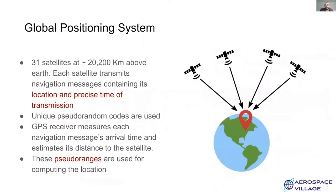GPS is a satellite-based navigation system which contains about 31 satellites orbiting the earth. Each satellite transmits navigation messages which contain its location and precise timing information. Each satellite uses a unique pseudorandom code for imparting the messages. The receiver on ground measures the time of arrival of these messages and estimates the distance to the respective satellite. These estimates or the pseudo ranges are used for computing the location.